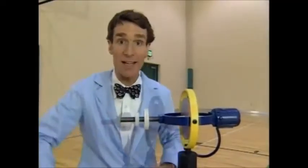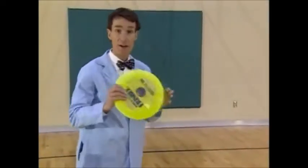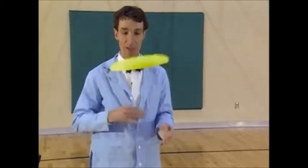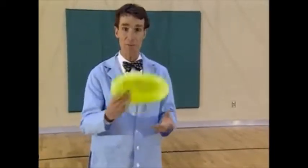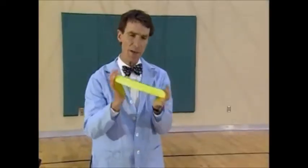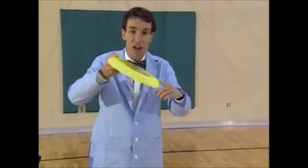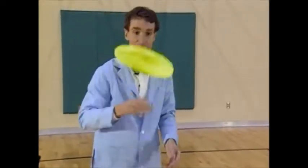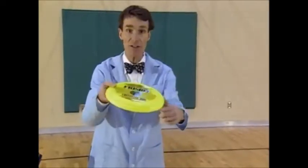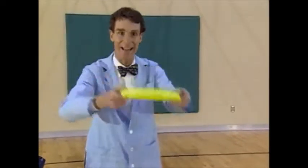Now you can really see it with a flying disc. A flying disc is a spinning thing, and spinning things push back sideways at a right angle. So if you want to make it bounce off the floor, you hit it on the side. If it's spinning this way, you hit it on this side and it will twist and go up like that.